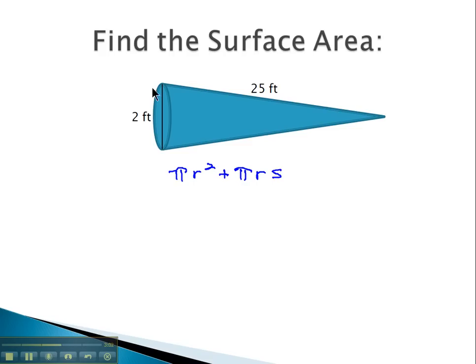We're told that the entire distance from top to bottom of this cone on the circle is 2 feet, which means the radius, just half of it, is going to be half of 2 or 1 foot. 25 is that slanting height, so that's our s. And let's plug in and see what we have. Pi is 3.14 times the radius, which is 1 foot squared.